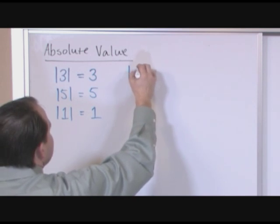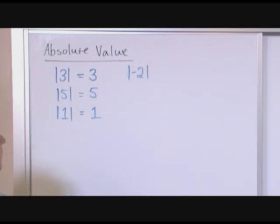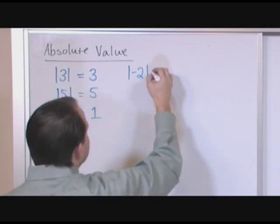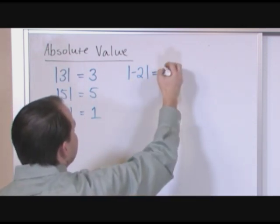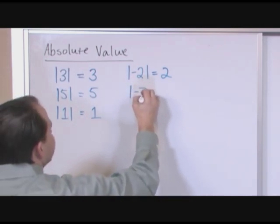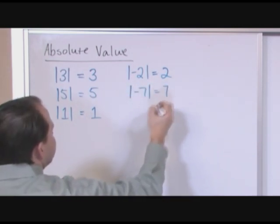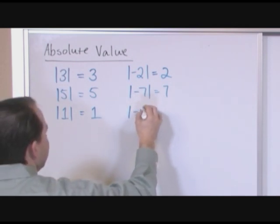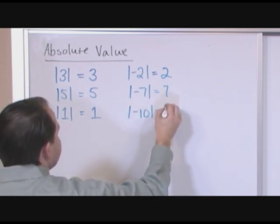The absolute value of the number negative two, which is negative numbers are new to a lot of people in this course, the absolute value of this is not negative two, it's positive two. The absolute value of negative seven is equal to seven. And the absolute value of negative 10 is equal to 10.